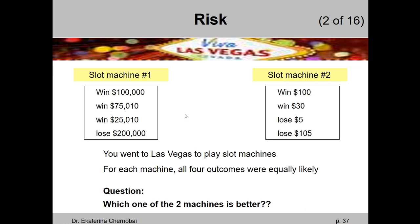So how would we calculate risk — how would we measure the amount of risk in different stock investments? Let's forget about stocks and imagine we're somewhere fun like Las Vegas. Imagine there are two slot machines. You can play slot machine number one or slot machine number two. If you play machine number one, there are four equally likely outcomes that randomly repeat: you can win $100,000, or $75,010, or $25,010, or you can lose $200,000. If you play machine number two, you can win $100, or win $30, or lose $5, or lose $105.